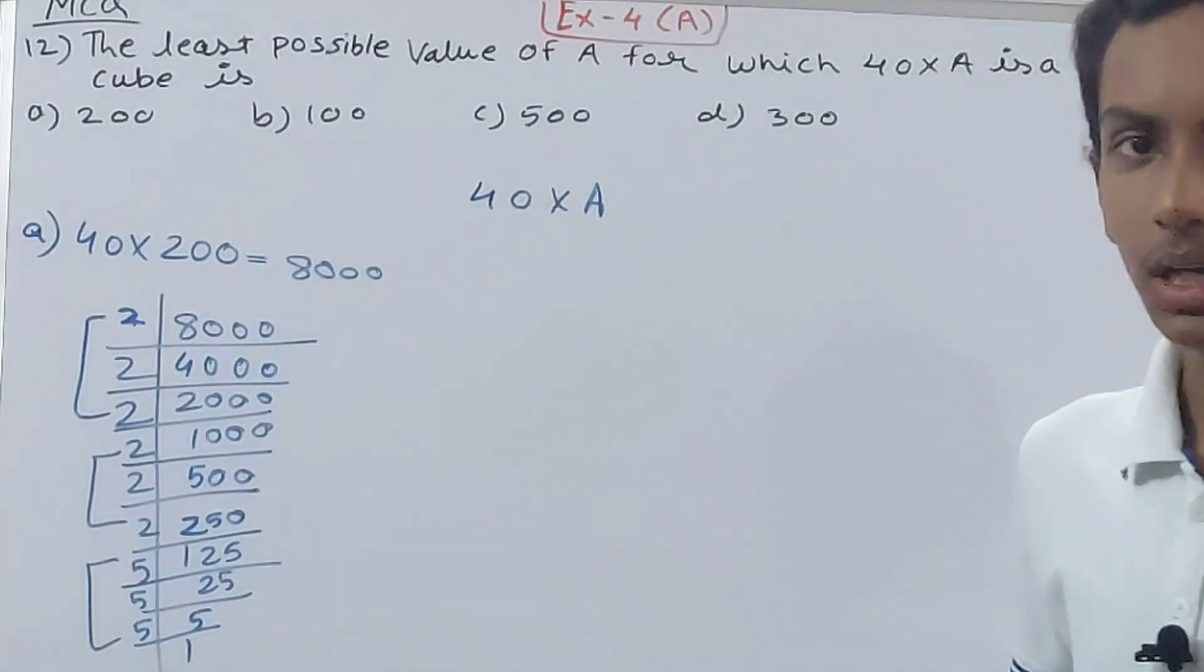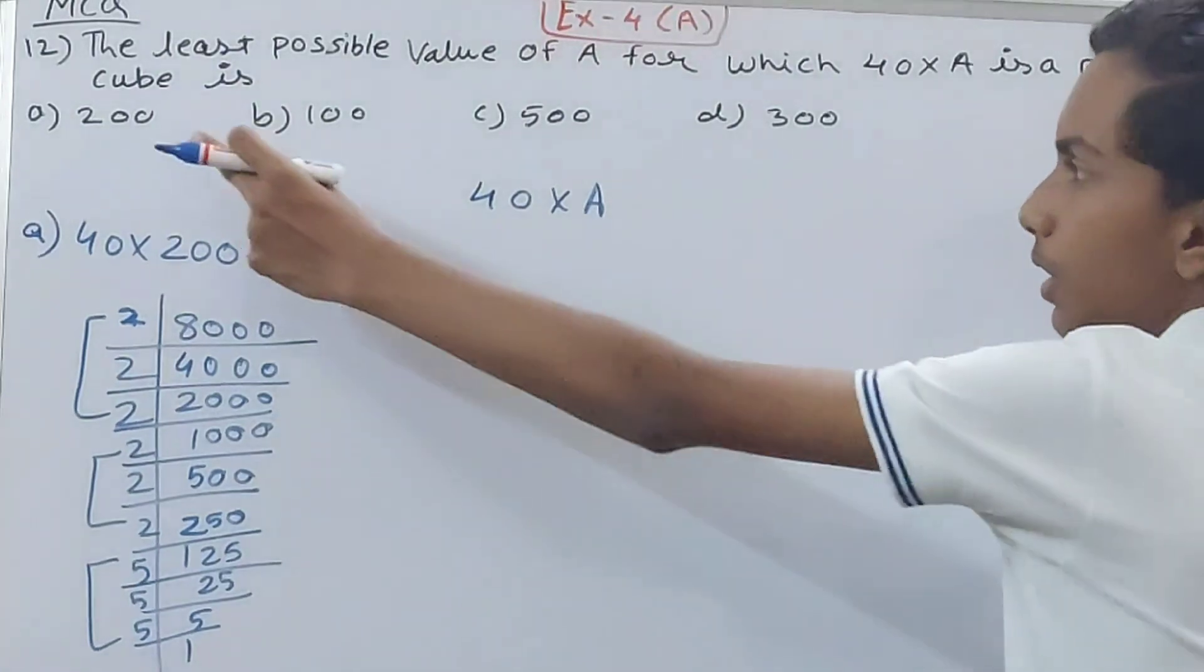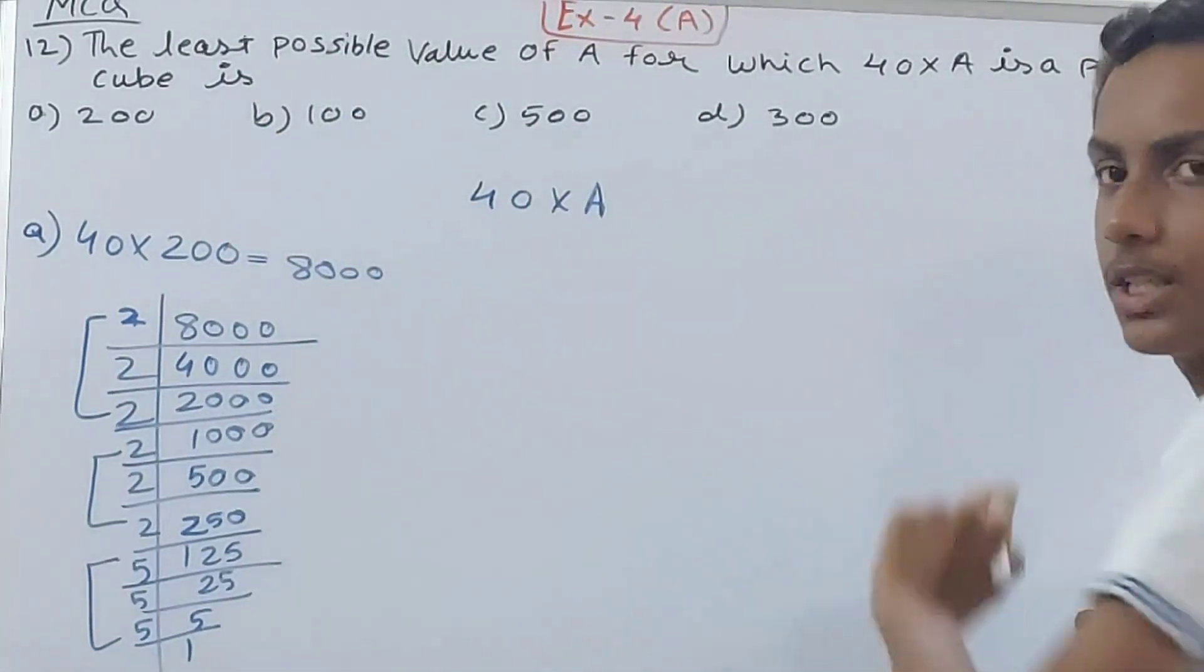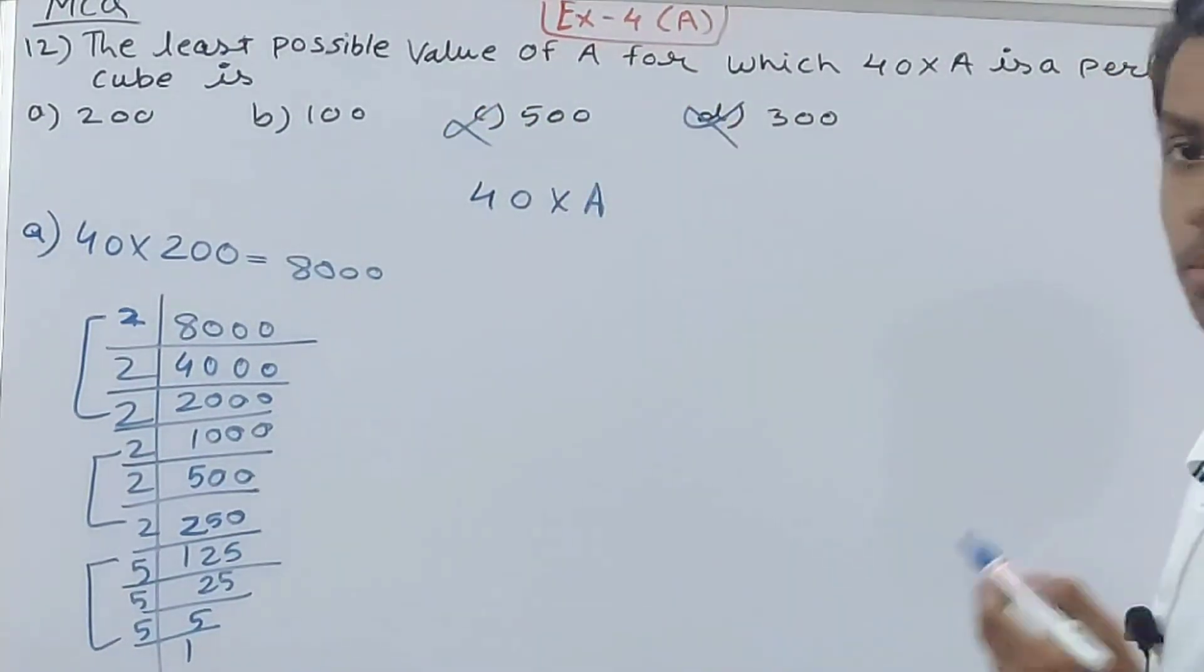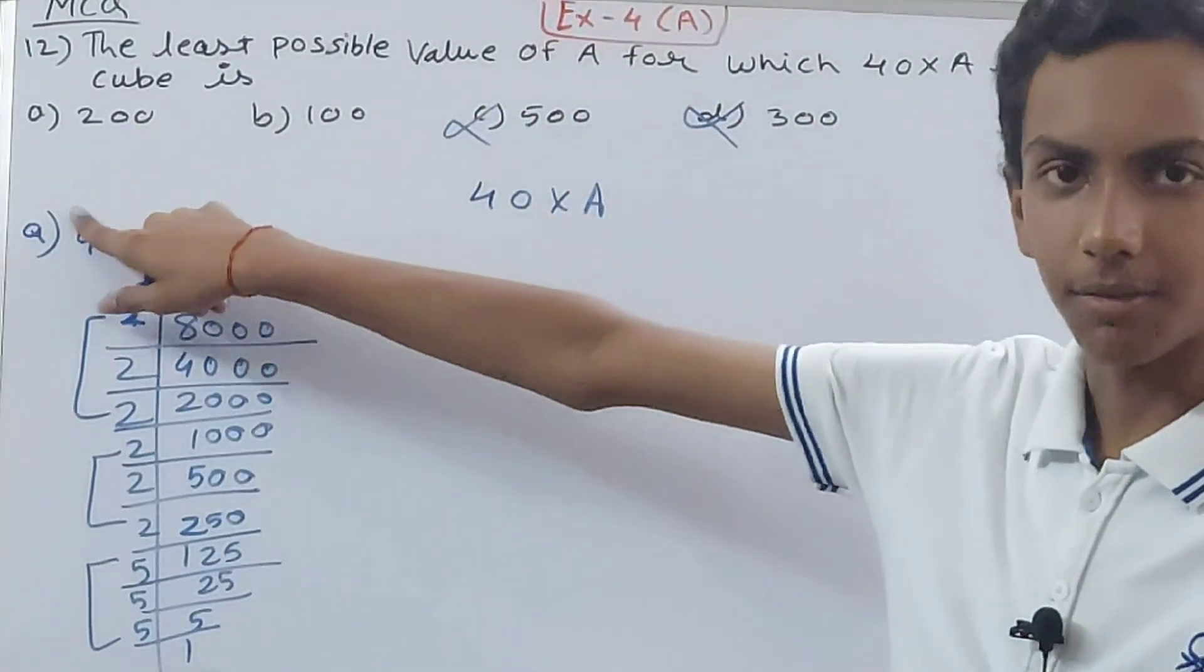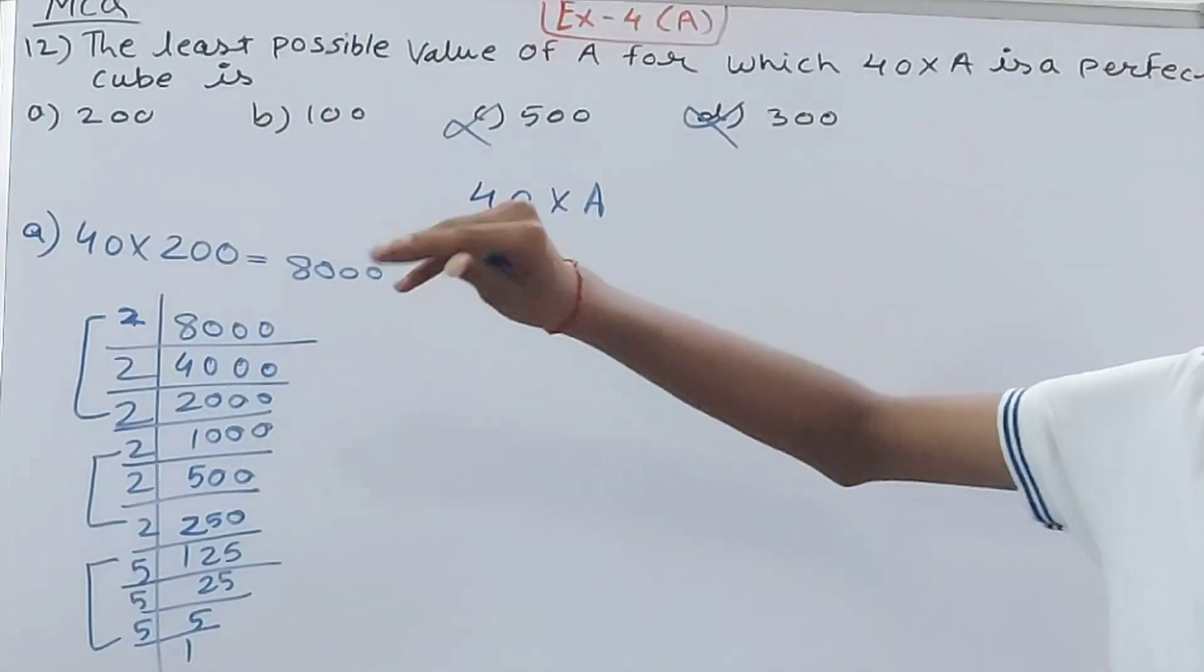So greater than 200, 500 and 300 are there. That means these two options are automatically cancelled because 200 already we have. So we only have to look for numbers smaller than 200, that is 100.